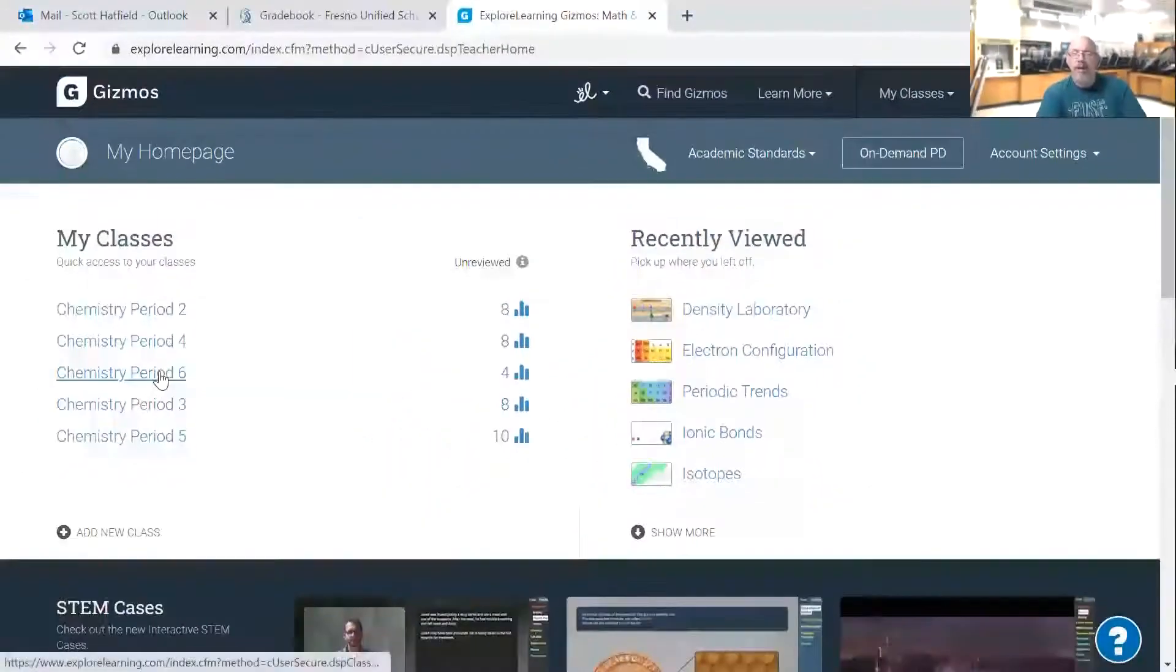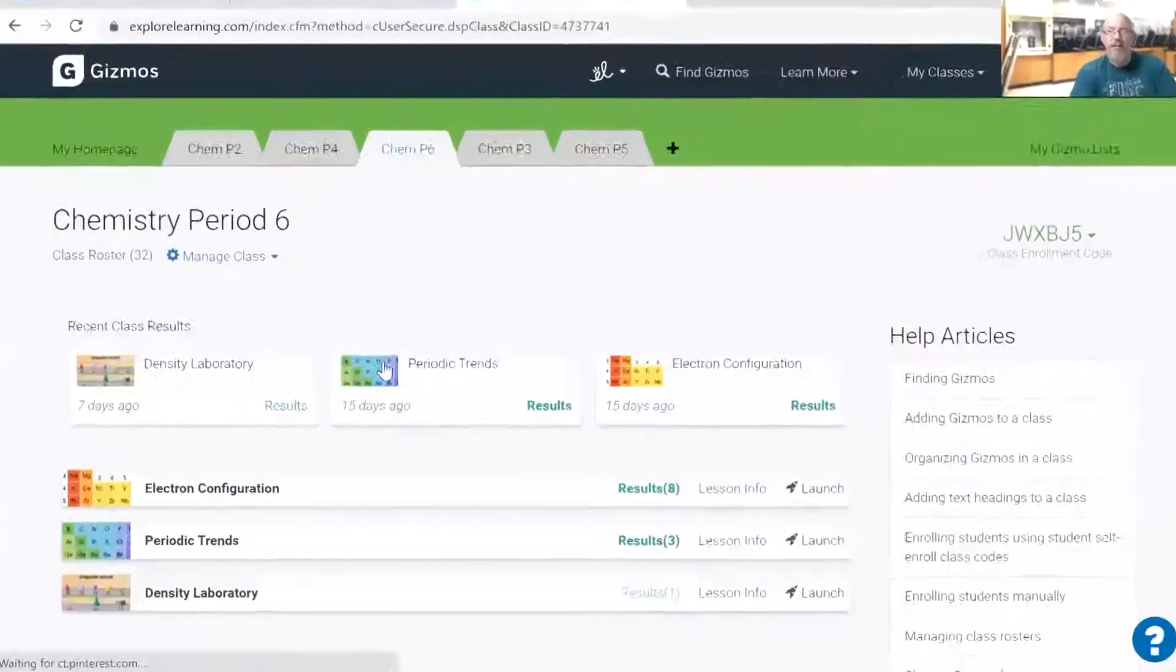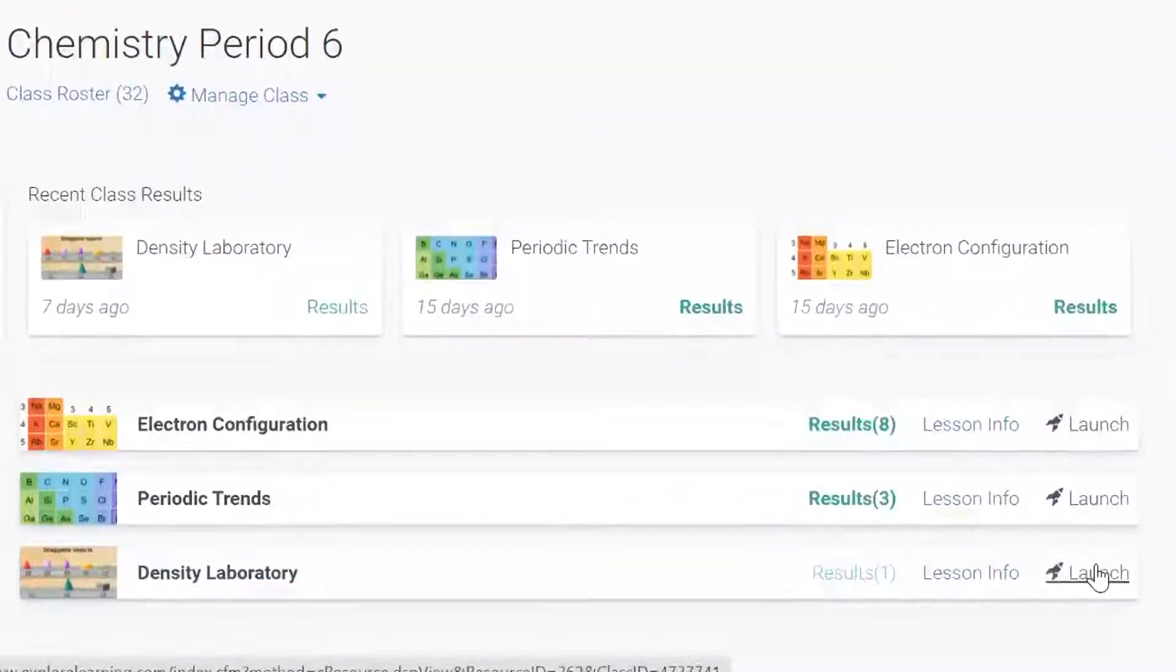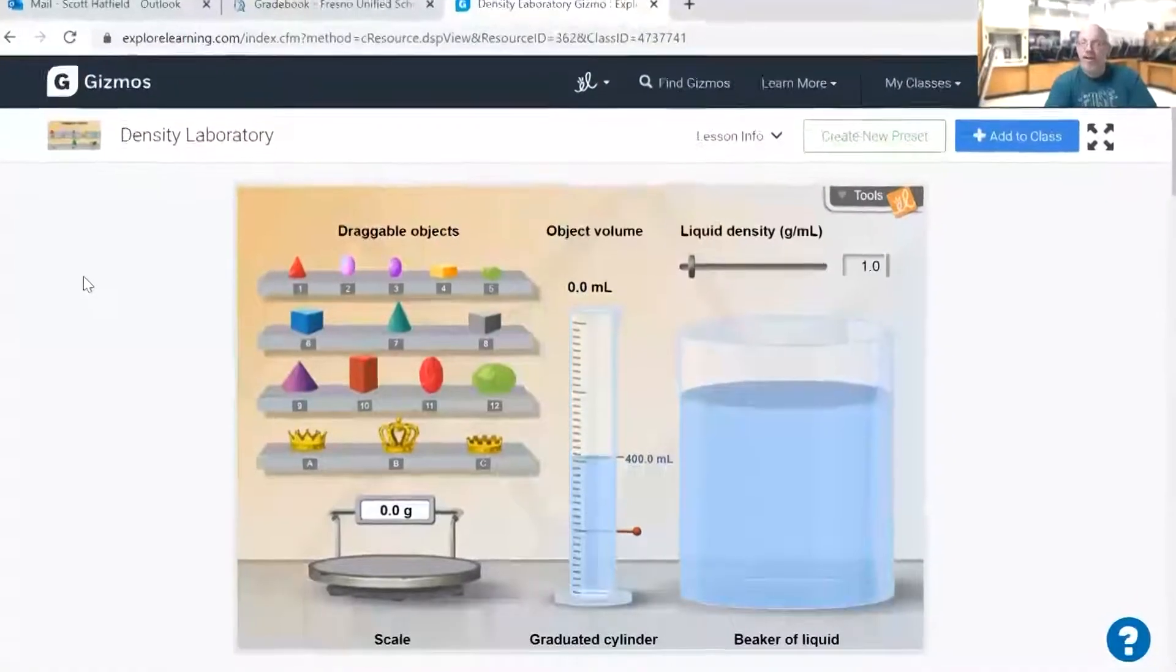you'll choose your period. In my case, I'll just go to period six. It really doesn't matter. We'll go here to the bottom where it says Density Laboratory. We'll click on the rocket icon to launch the gizmo.